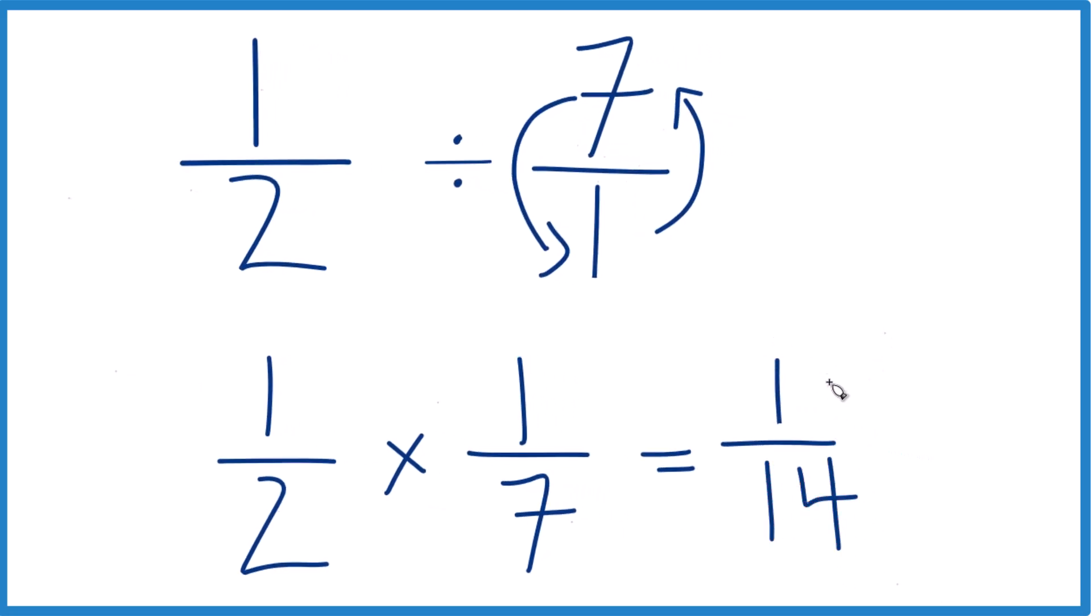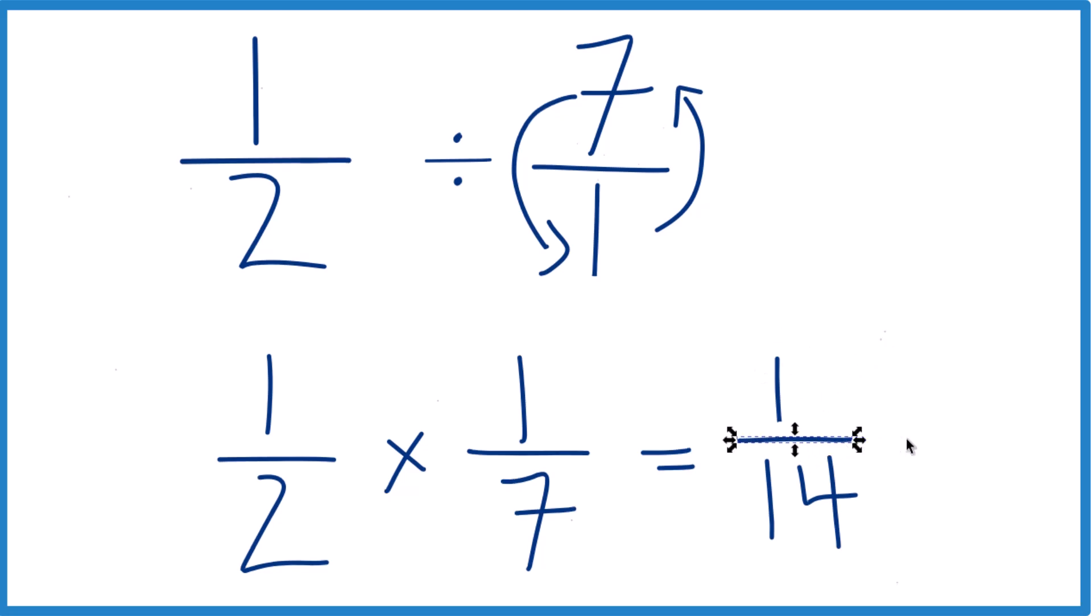So 1 half divided by 7 ends up being 1 over 14.